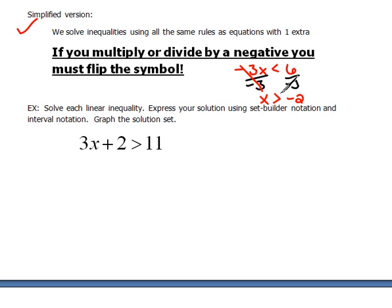This first one, we have 3 times x plus 2 is greater than 11. So let's move the 2 to begin with by subtracting 2, doing the opposite. Now we have 3x, and on the right hand side we have 11 minus 2, which would be 9. We did not multiply or divide by a negative, we just subtracted, so the sign stays the same.